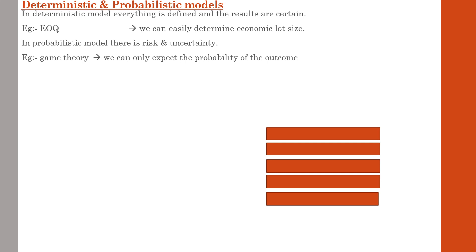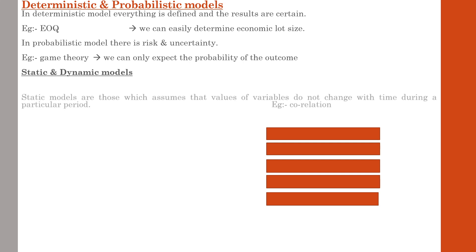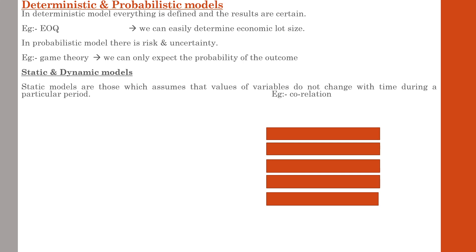The next types of models are static and dynamic models. Static models do not take time into account during computation — they don't consider the time factor. For example, correlation: we study the relationship between variables x and y with no time factor to consider. It is based on the assumption that values of variables do not change with time during a particular period.